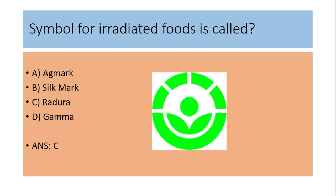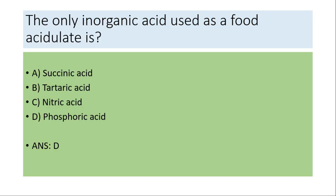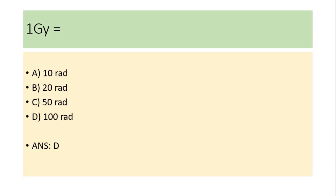On the right side you can see the symbol of radura. The only inorganic acid used as a food acidulant is: (a) succinic acid, (b) tartaric acid, (c) nitric acid, (d) phosphoric acid. The answer is (d) phosphoric acid.